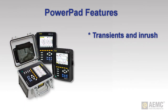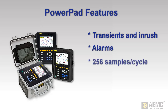The PowerPad can detect and record short-term anomalies such as transients and inrush current. You can also configure alarms to identify when a measurement falls outside defined parameters. The PowerPad takes 256 samples per cycle, resulting in over 15,000 samples per second on 60 Hz networks. These samples are used to calculate highly detailed sub-cycle data.